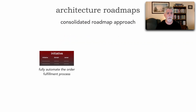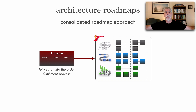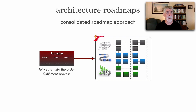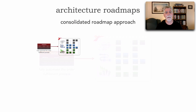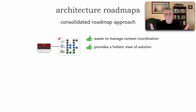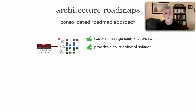Another approach is the consolidated roadmap approach. To automate the order fulfillment process, we create one large consolidated view that includes all three dimensions — architecture and technology transformation, business workflow transformation, and organizational change. The advantage is one easy holistic view of the overall approach. It's easier to manage coordination because we can visually see dependencies between technology, business workflows, and organizational change.